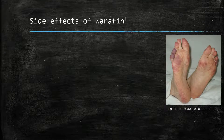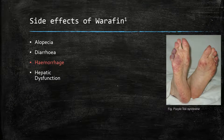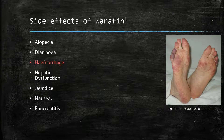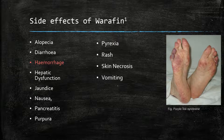The side effects of warfarin, the most important being bleeding, include alopecia, diarrhoea, hepatic dysfunction, jaundice, nausea, pancreatitis, purpura, pyrexia, rash, skin necrosis, vomiting, and purple toe syndrome, of which there is a picture on the right-hand side.